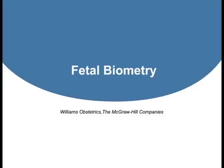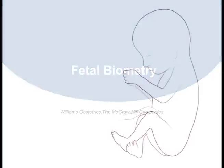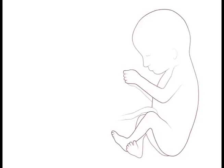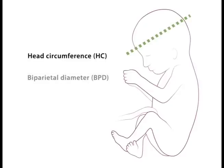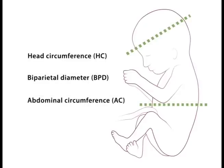Fetal Biometry. After the first trimester, fetal weight and age are most accurately estimated from measurements of head circumference and biparietal diameter, abdominal circumference, and femur length.